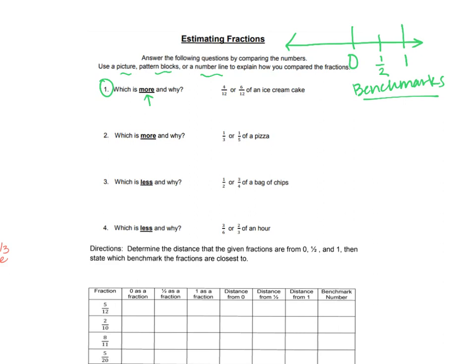Now let's look at the reasoning. For the first comparison, 6/12 would be more than 4/12 because the pieces are the same size — twelfths — and six pieces is more than four. You could draw a number line from zero to one, mark 11 equally spaced points dividing it into 12 parts, and count to four-twelfths then to six-twelfths to see the difference visually.